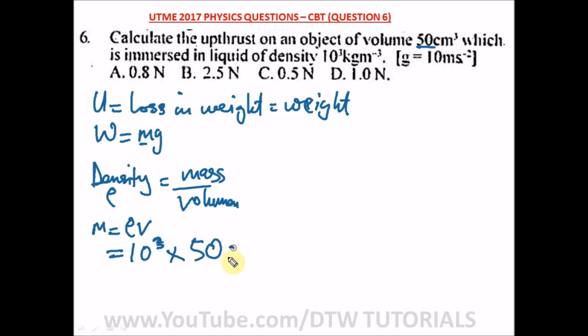We have to convert this to m³. Converting to m³, we divide by 1 million, that's 1000 twice. When we divide, these three zeros cancel out these three zeros, and this one zero cancels this one zero, leaving 5/100. 5 into 100 is 20, so our mass is 1/20.